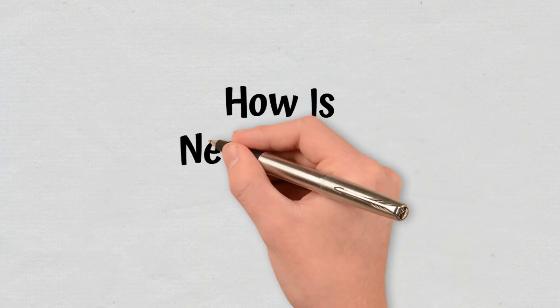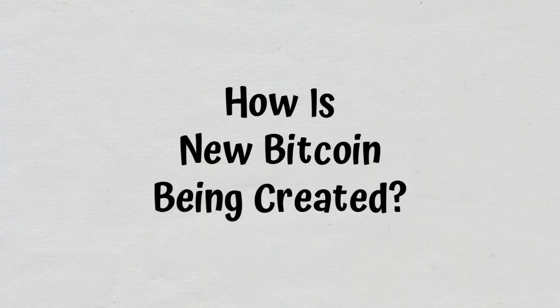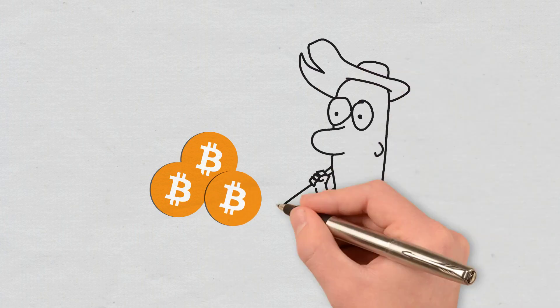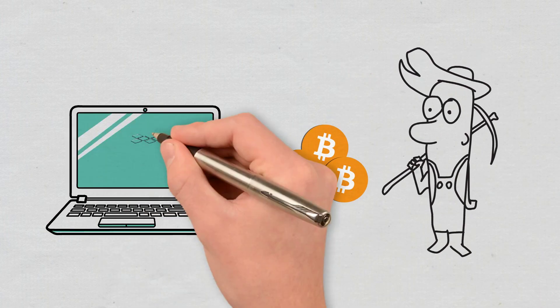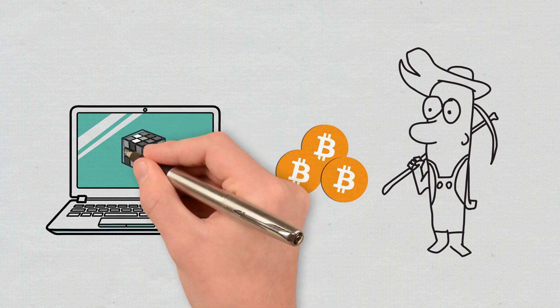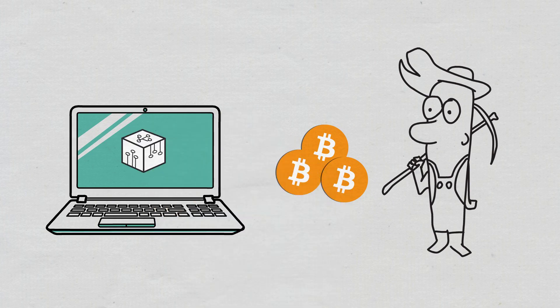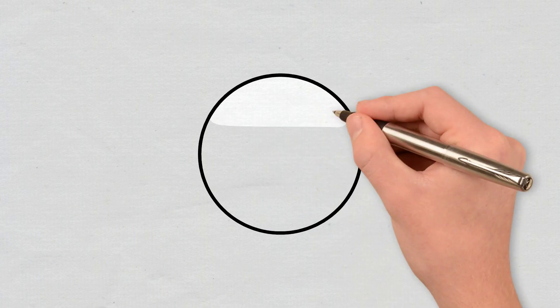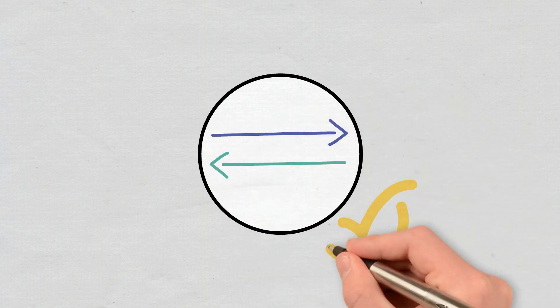How is new Bitcoin being created? New Bitcoins enter circulation through mining. Mining means solving computationally difficult puzzles in order to discover a new block. Once the new block is discovered, it becomes part of the blockchain. Bitcoin mining also means adding and verifying transactions on the network.